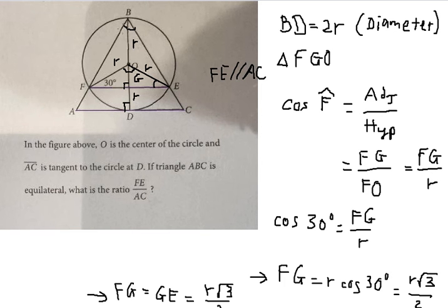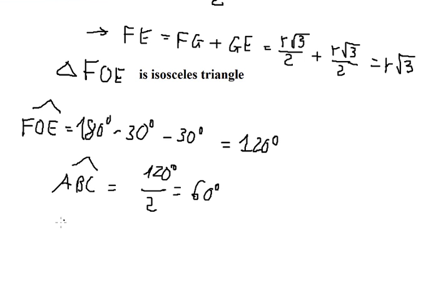So angle ABD should be 60 degrees divided by 2, giving us 30 degrees. Therefore angle ABD equals 30 degrees.